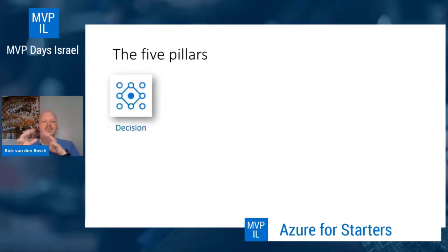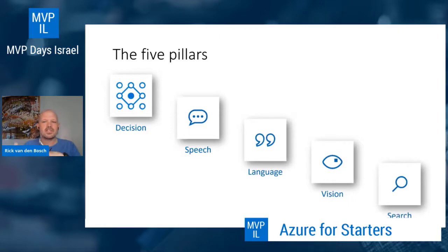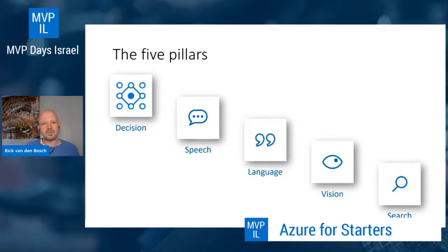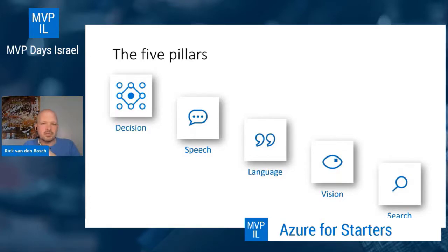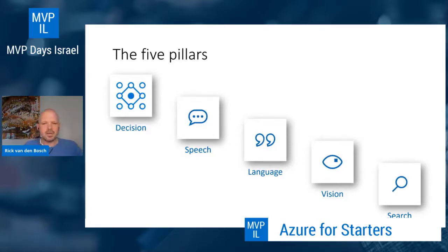If you look at what cognitive services in Azure actually are, it's a set of services that do cool stuff on five different pillars: decision, speech, language, vision, and search. They help you make decisions based on information you get. They can help you do stuff with speech — either speech to text or text to speech. The speech capability has advanced so much that you almost cannot hear anymore that text is being read by a computer-generated voice instead of a human voice.